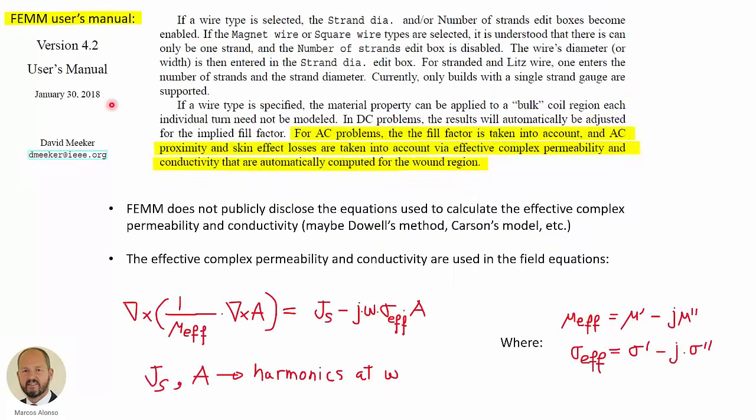Before using this option, I think that it's interesting to take a look at the manual first. If we look for the Litz wire possibilities in the manual, we can find this information. Here we can see how to do it. One enters the number of strands and the strand diameter. But I think that the important information is this one. For AC problems, the fill factor is taken into account and AC proximity and skin effect losses are taken into account via effective complex permeability and conductivity that are automatically computed for the wound region.